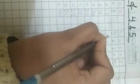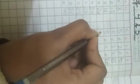5 1's are 5. 5 2's are 10. 5 3's are 15. 5 4's are 20. 5 5's are 25.